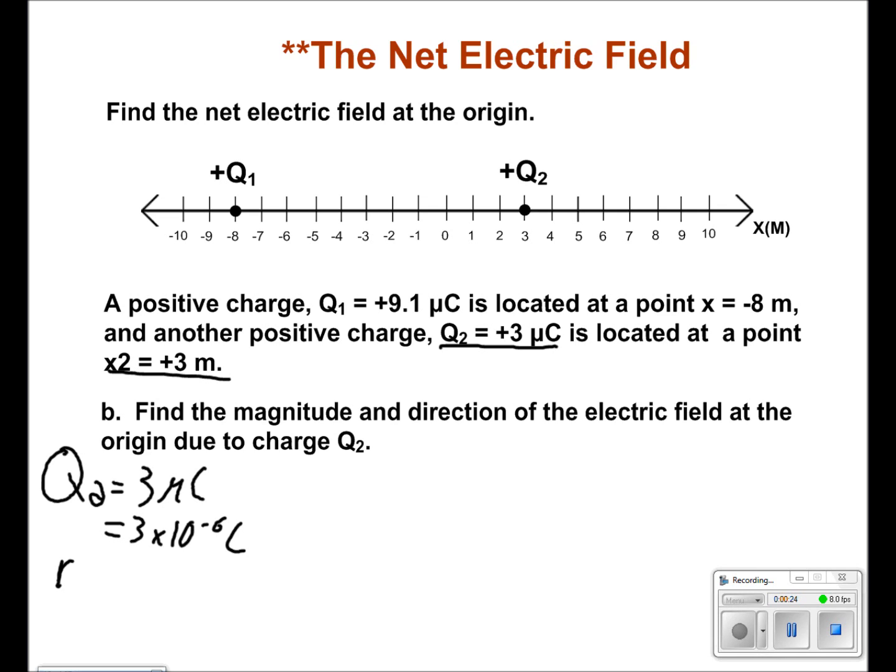Q2 is a distance 3 meters from the origin written as R2. We now use our equation E2 equals KQ2 over R2 squared.